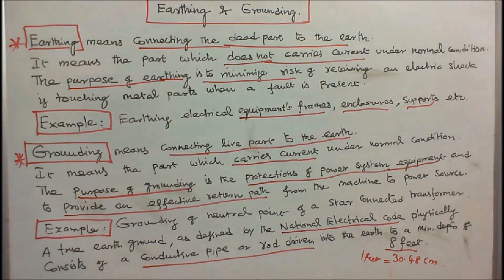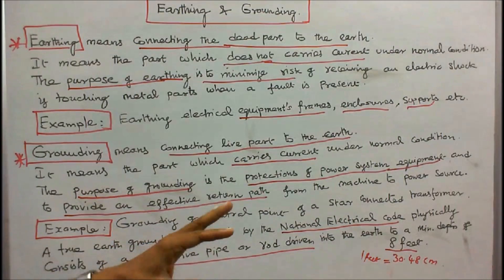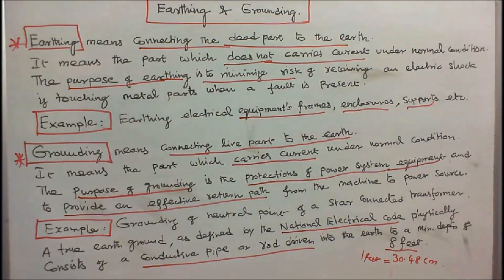Example: grounding of neutral point of a star connected transformer. A true earth ground as defined by the National Electric Code physically consists of a conductive pipe or rod driven into the earth to a minimum depth of 8 feet. One foot is equal to 30.48 cm.